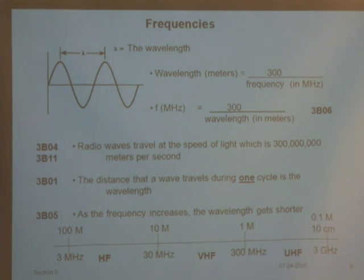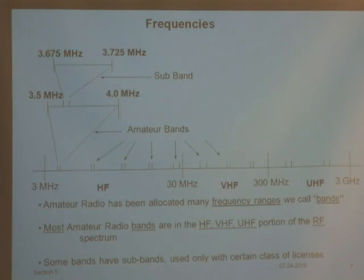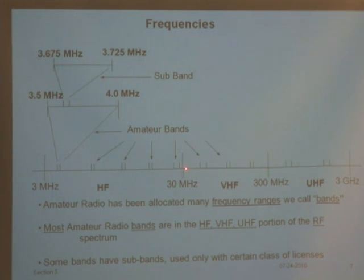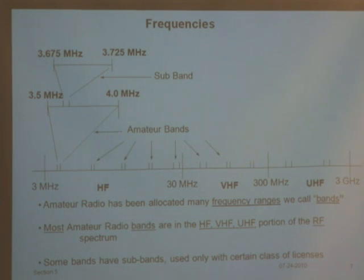Now there's another memorizing issue coming up. In these different frequency ranges, the FCC says we're going to give you a set of frequencies you can operate on — these are called amateur bands. We have a range of frequencies we call bands. When you get your license, you'll be licensed to operate on certain bands. For example, one band goes from 3.5 megahertz to 4 megahertz. With certain licenses you can transmit only on a piece of the band; with a general license you can use the whole thing.